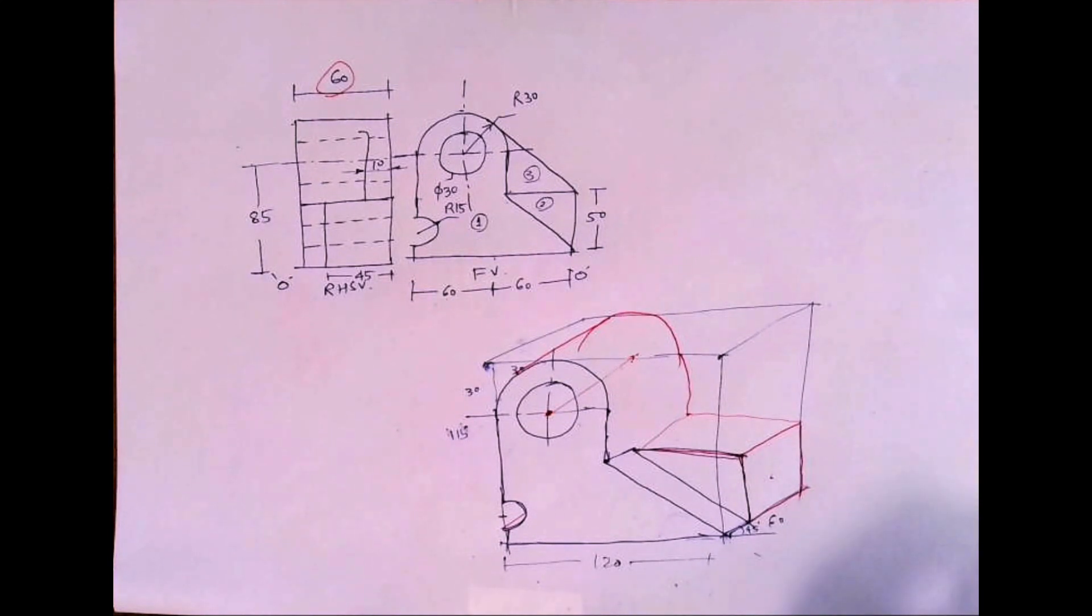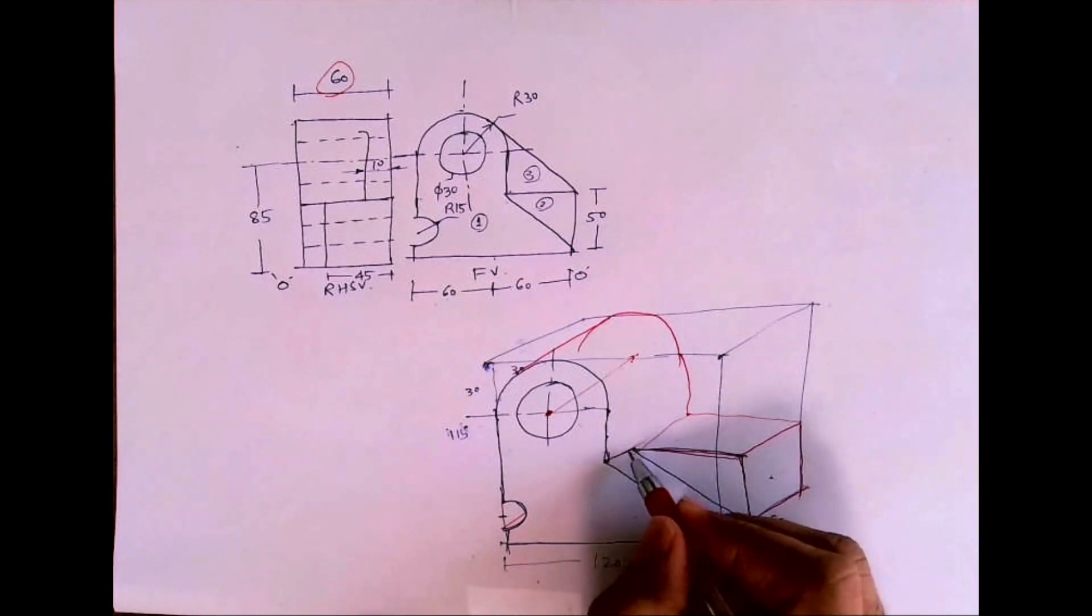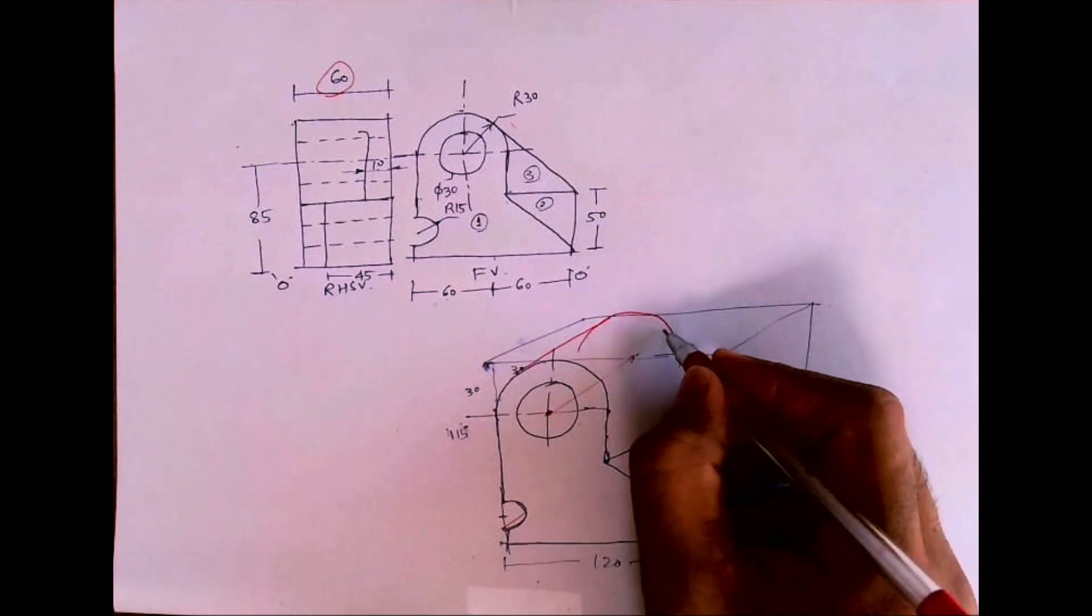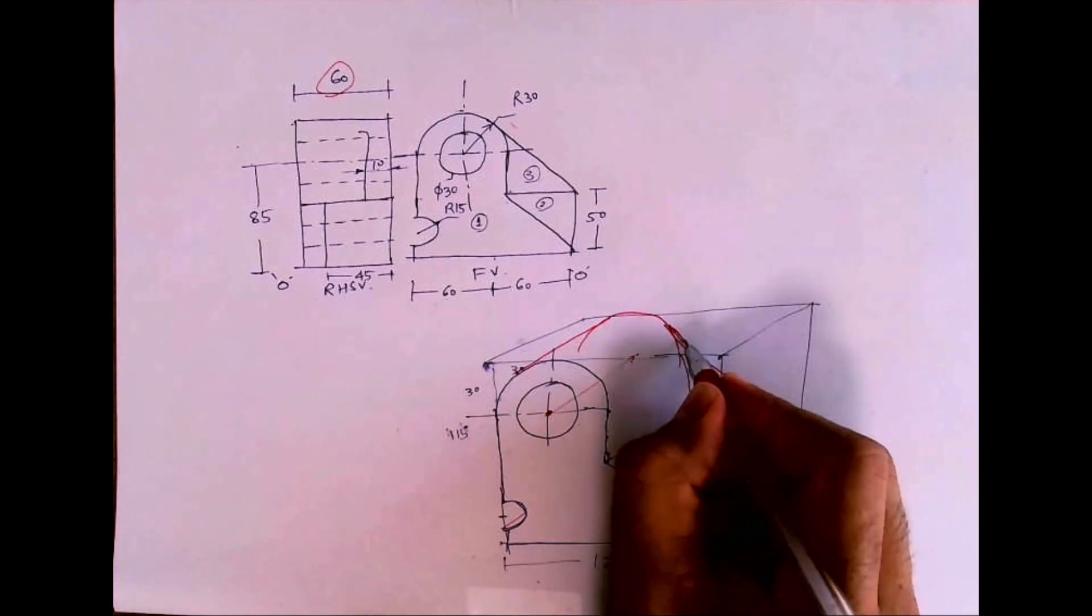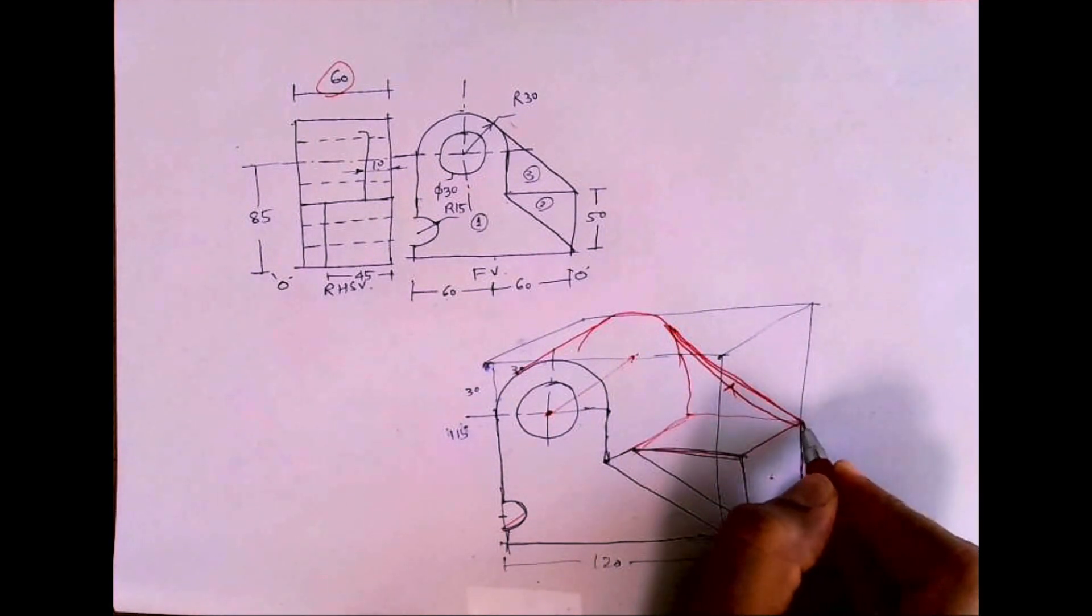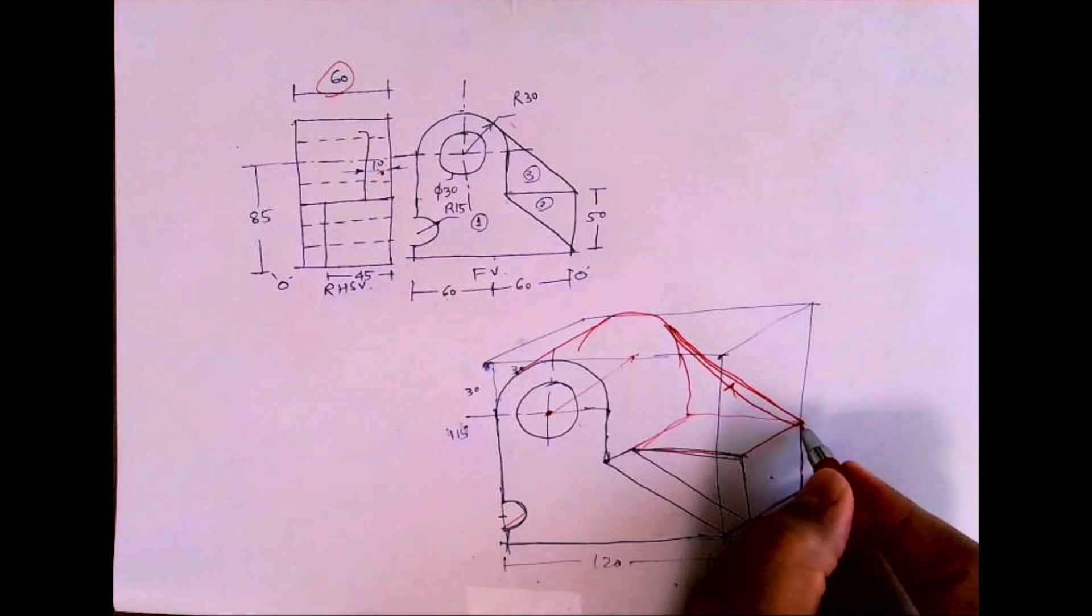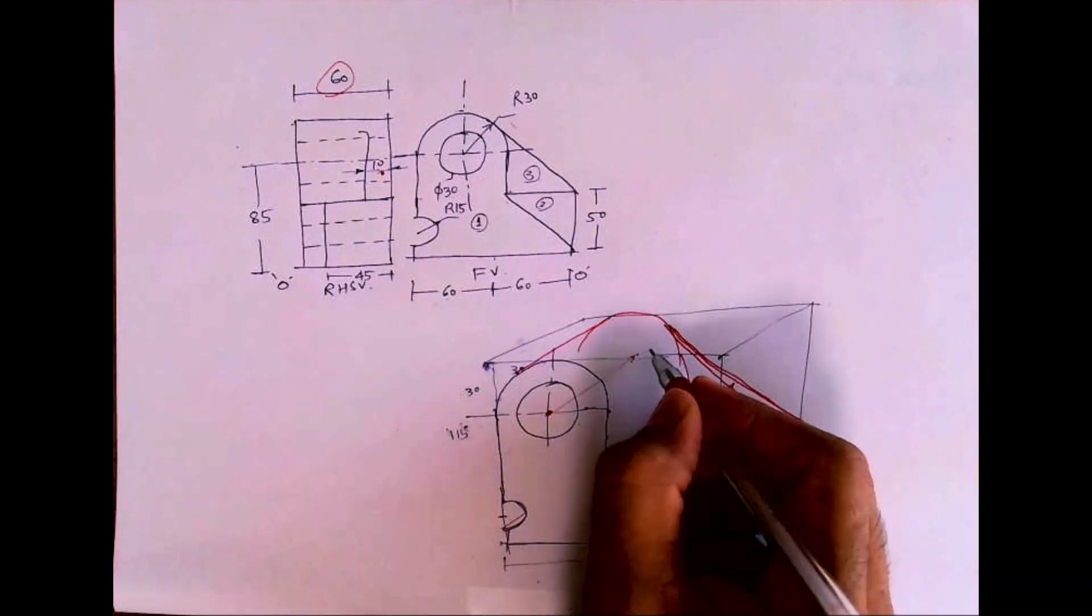If there is nothing, then it will be like this. But if you see, they have a rib, an inclined portion, so you join that. How much is the width? 10. So you take 10 and draw a parallel line.